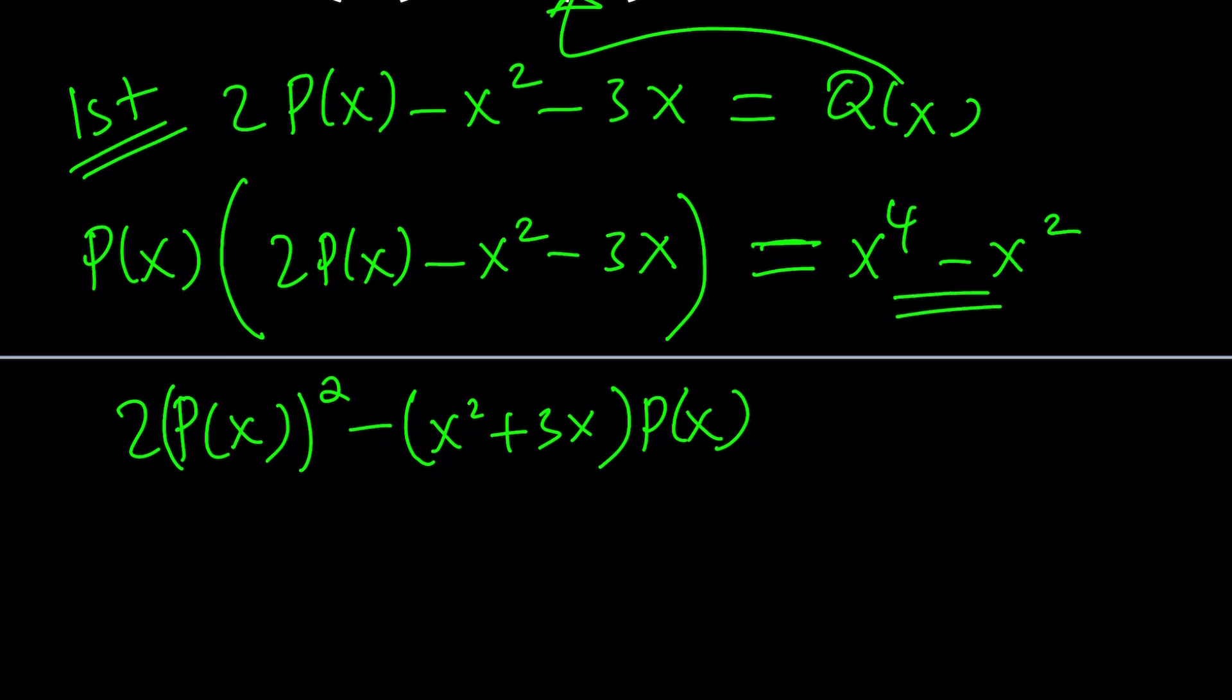So let's put that in parentheses again, and that will be multiplied by P(x). And then these two terms, we're going to bring them to the left-hand side because they will make up the constant. So they're going to be negated, and that will give us x squared minus x to the fourth, and the whole thing will be 0. Awesome. Now we've got a quadratic equation, just pretend it's quadratic.